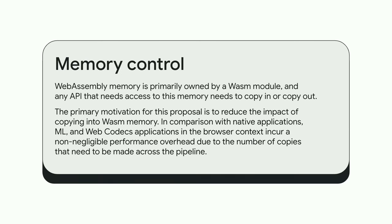Another surface that adds friction when interacting with WASM is that developers have very little control over the WASM memory itself. The WASM module owns its memory, which isn't ideal because any API that needs access to chunks of memory will need to copy in and copy out — and depending on the application, this could really add up. The memory control feature aims to provide finer-grained control over memory and reduces the number of copies across the application pipeline. This is an early-stage feature and we're actively working on prototyping it.